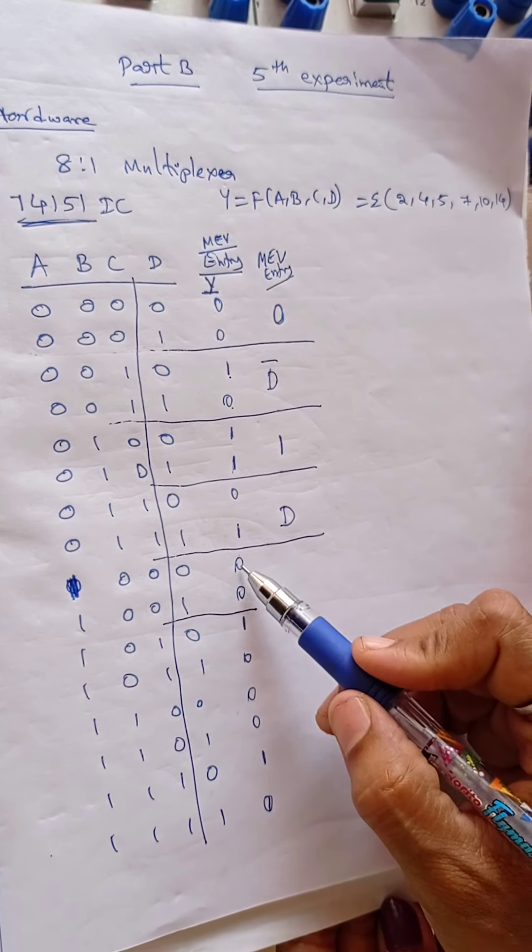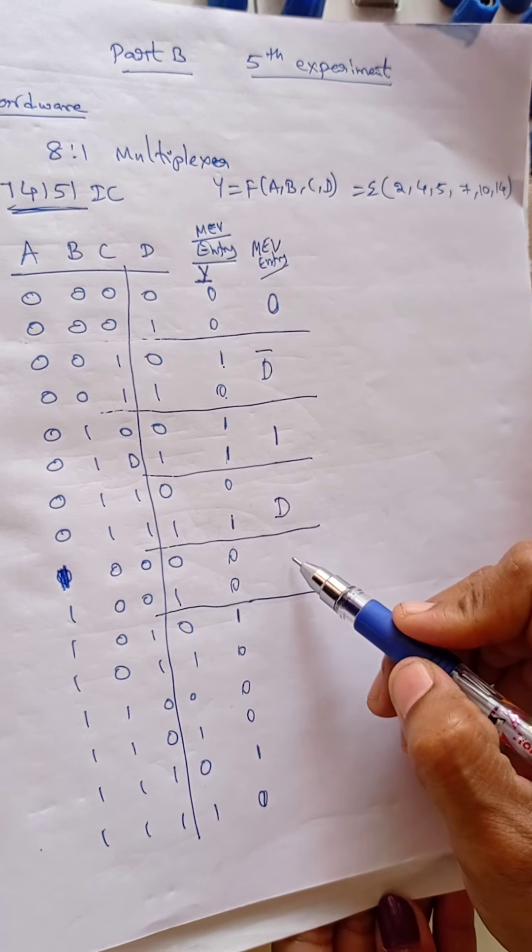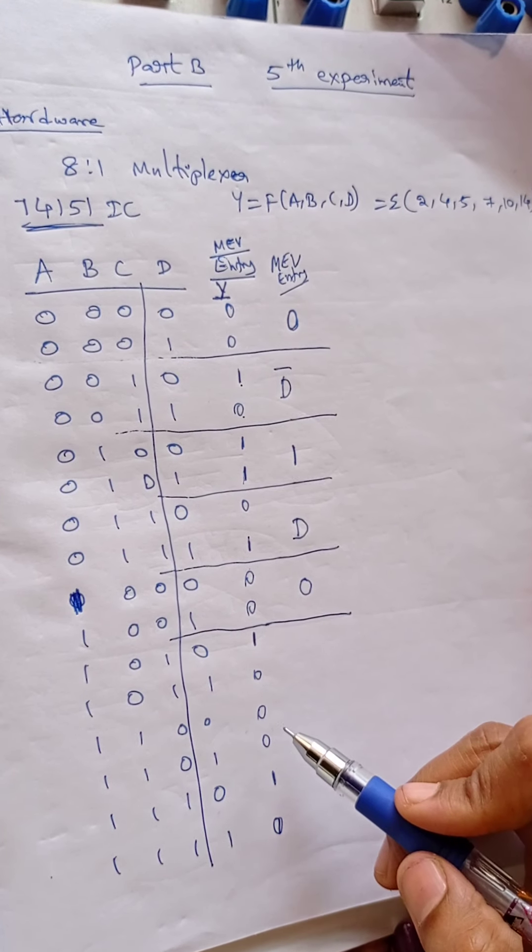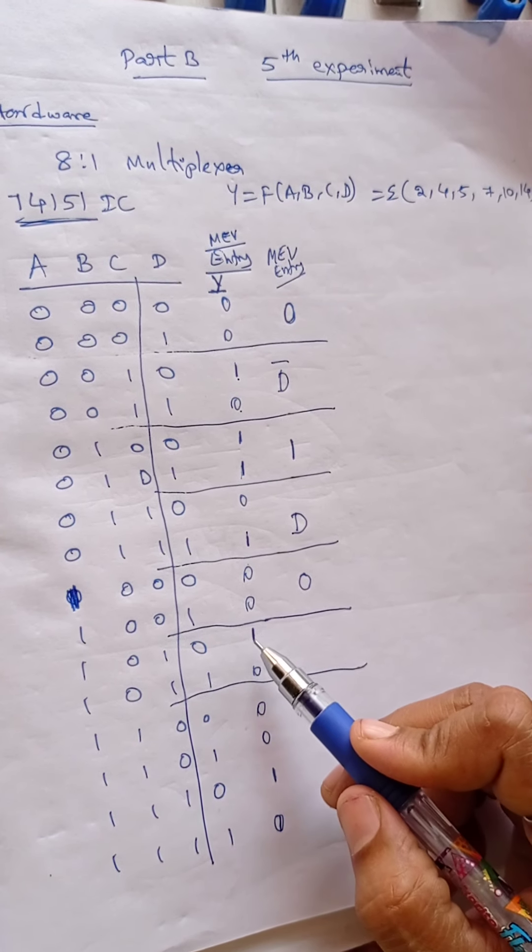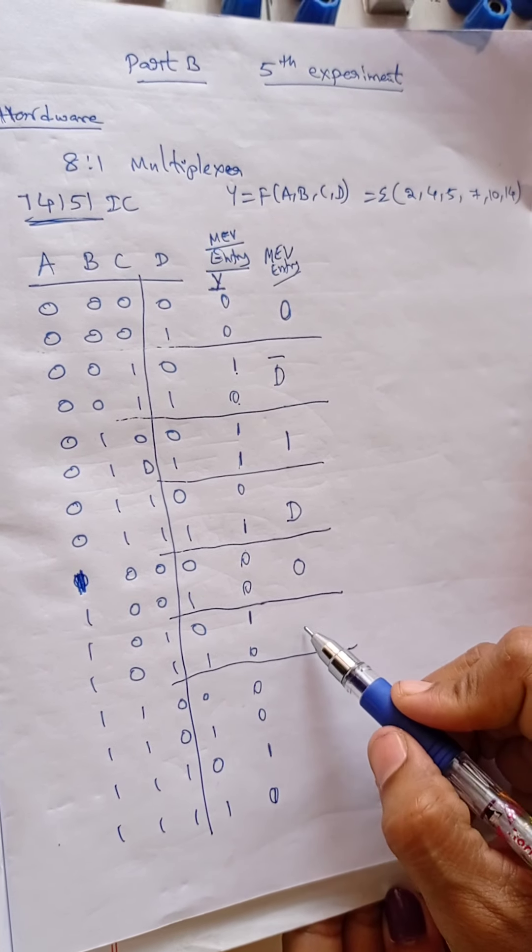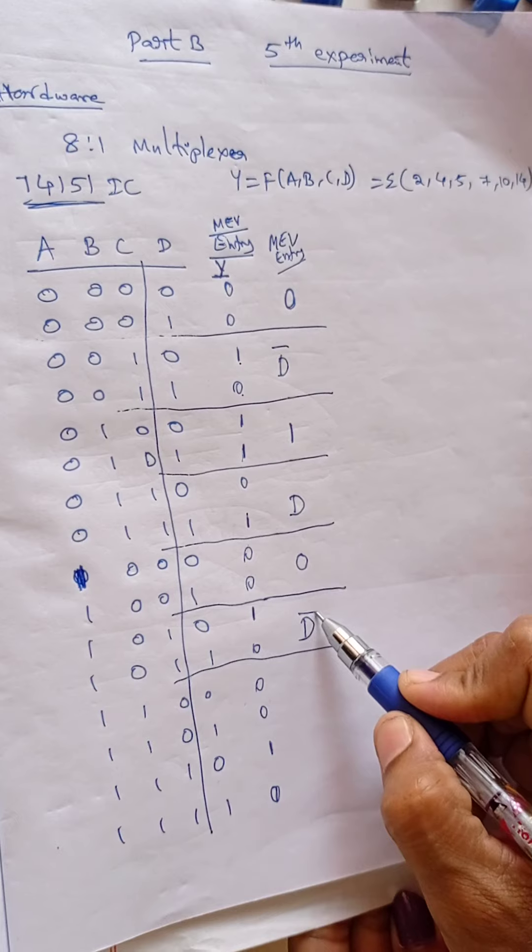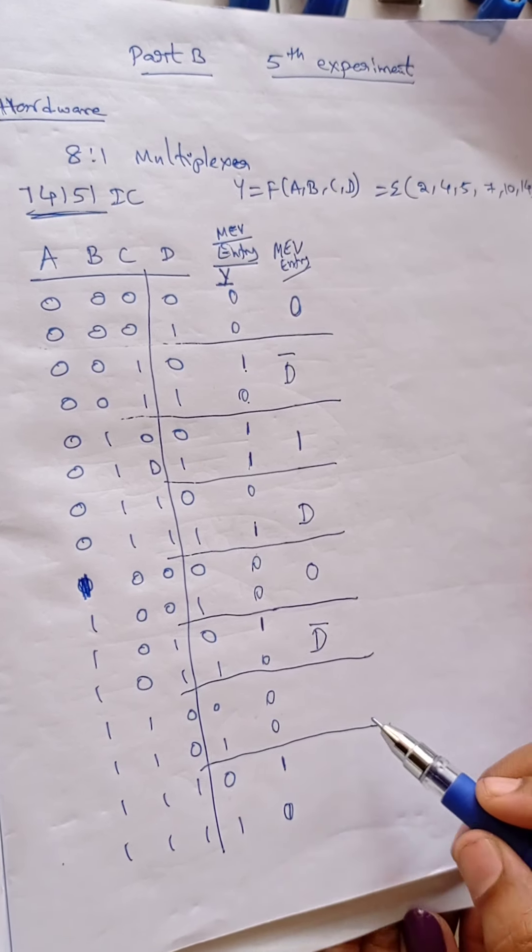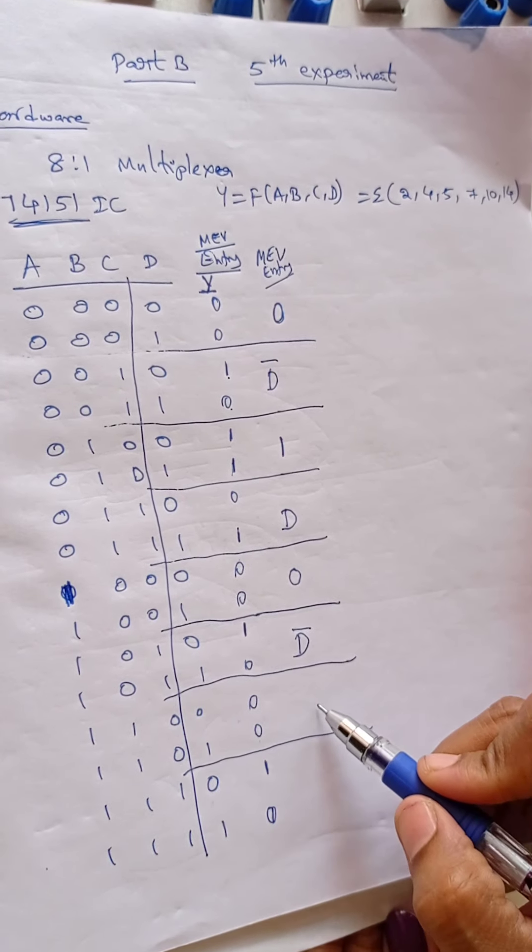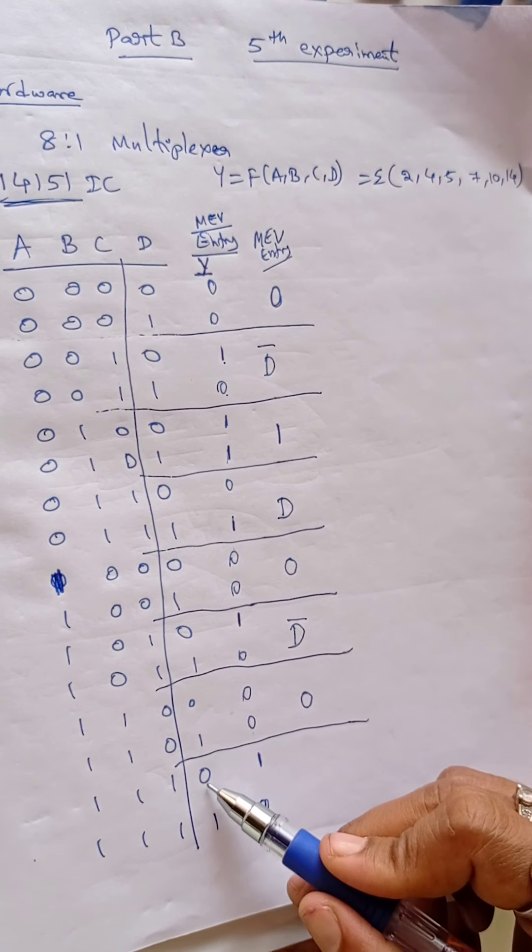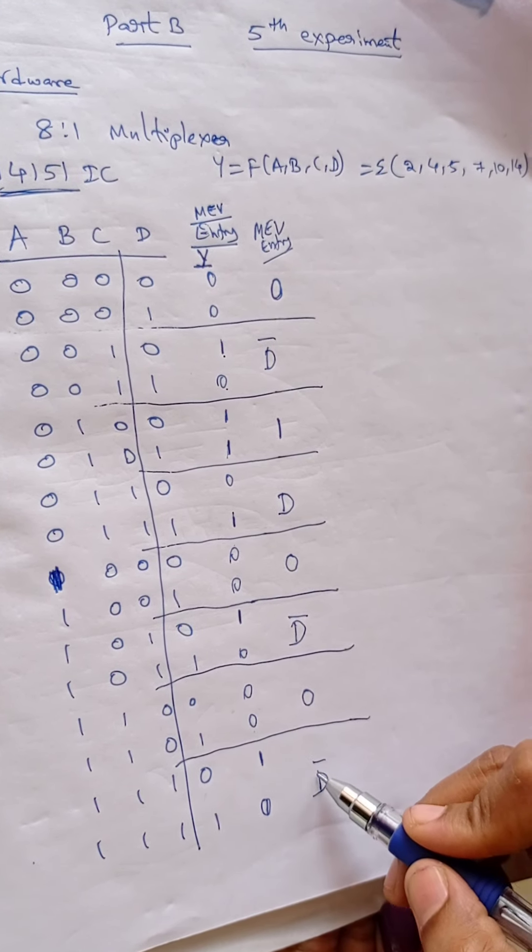Next here 0, 0, so take it, enter value 0. Now inverted values 0, 1 and changing 1 to 0, so inverted D bar. Here 0, 0, so you should enter 0. Inverted values again D bar.